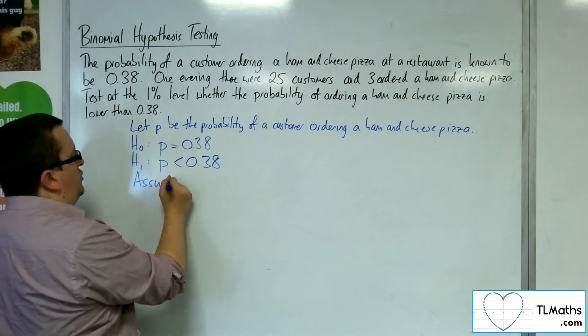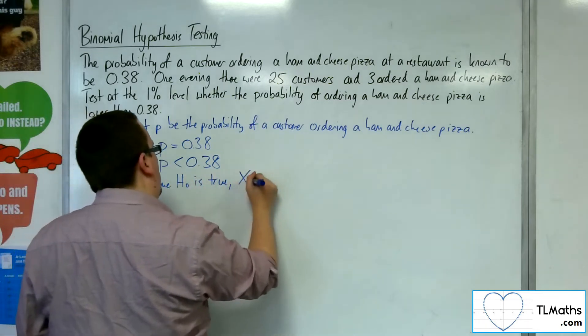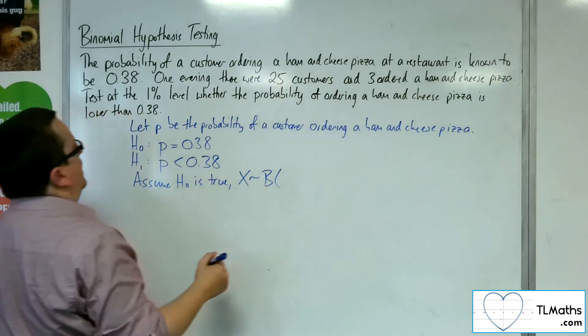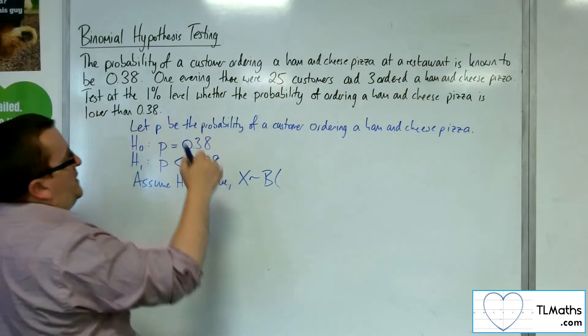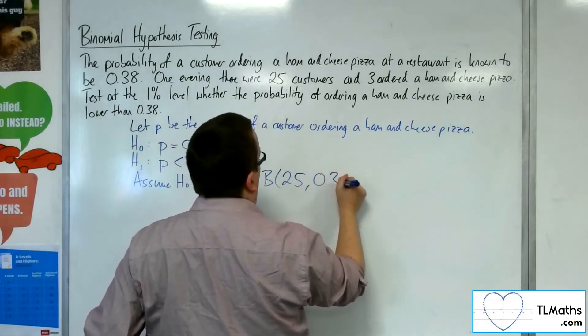So we assume H0 is true and we set up a binomial distribution where we have an N at 25 and a probability of success at 0.38.